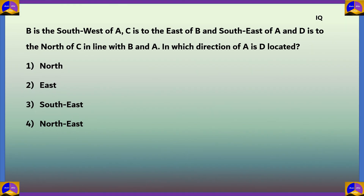Last question in IQ: B is to the southwest of A; C is to the east of B and southeast of A; D is to the north of C in line with B and A. In which direction of A is D located? Option 1: north, option 2: east, option 3: southeast, option 4: northeast. Let's draw a diagram.